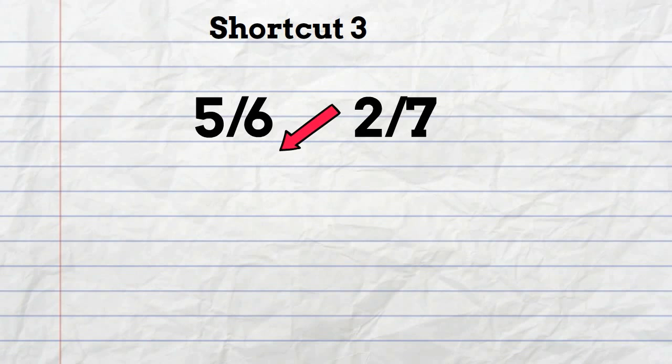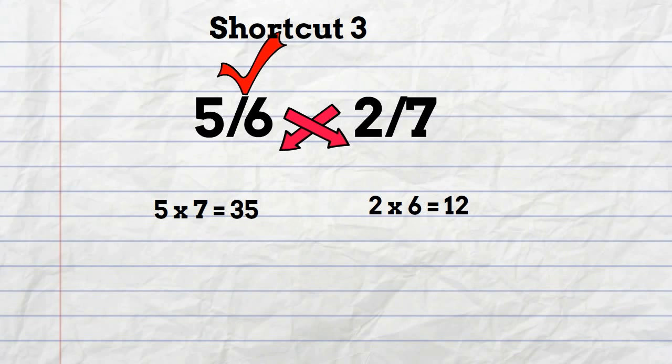In this example when you cross multiply 5 times 7 which is 35 and 2 times 6 which is equal to 12, the fraction with the largest number after cross multiplying is the largest fraction.